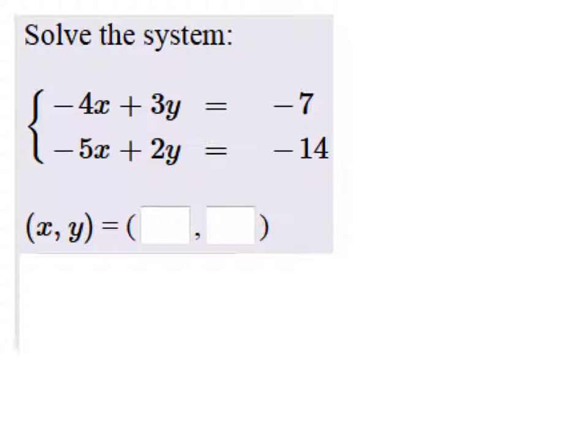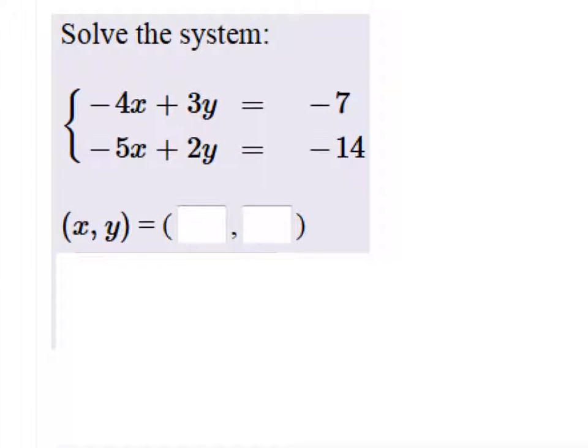All right, so we need a multiple of 2 and 3, which are the coefficients of y's, so that they're the same, and then we'll make them opposites. I'm just going to use 6. I mean, you could use 12 or 18 or anything thereafter, but that's good, 6.